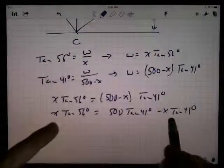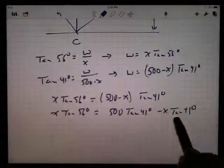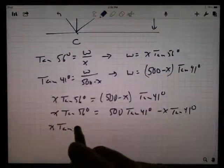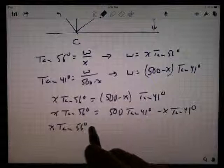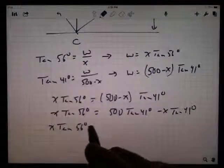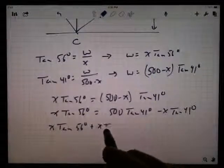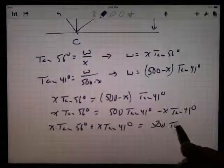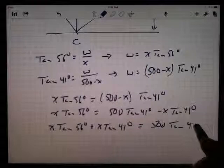I can see an X on this side and X on that side. Let's get it together. So I'm going to take this term and add it on to the other side. So I've got X tan 56 degrees plus X tan 41 degrees equals 500 tangent 41 degrees.